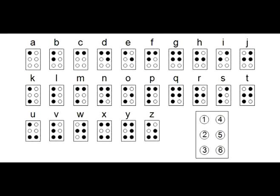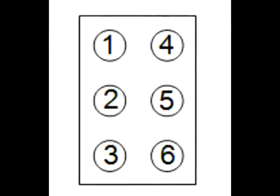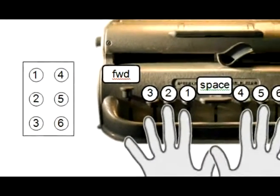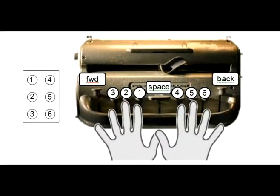Braille is a code that uses combinations of six dots to represent letters of the alphabet. The Perkins Brailler is a standard Braille keyboard. There are six main keys, one for each dot in the Braille cell. To type a Braille character, you press combinations of keys, or chords, at the same time.